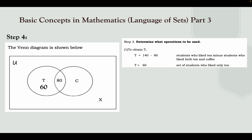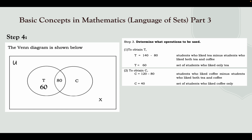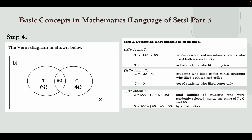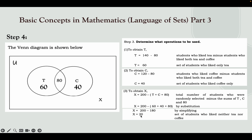That gives 60 students who like tea only. Next, to obtain C, the students who like coffee only: it's stated that 120 students like coffee, so we subtract 120 minus 80, giving 40 students who like coffee only. To obtain X, we subtract 200 — the total number of students — from the total of those who like tea only, coffee only, and both: 60 plus 40 plus 80 equals 180. So 200 minus 180 equals 20. That means 20 students like neither tea nor coffee.